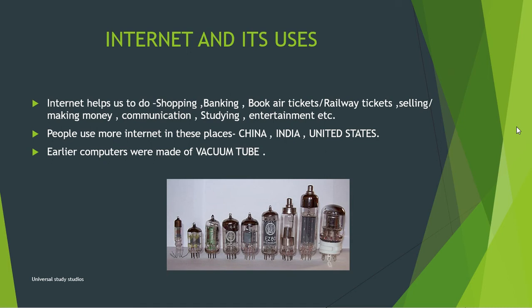Internet helps us to do shopping, banking, book air tickets and railway tickets, selling or making money, communication, studying, entertainment, etc. People use the internet more in places like China, India, and the United States. You might be asking why only these three areas have more internet usage.